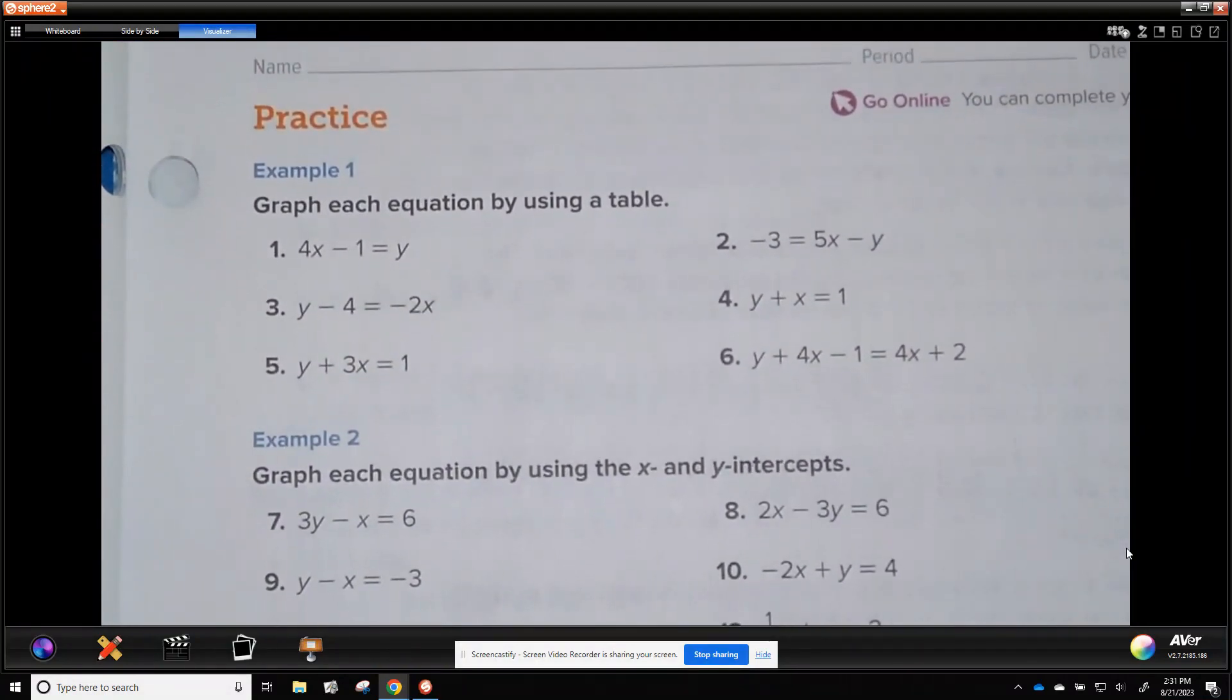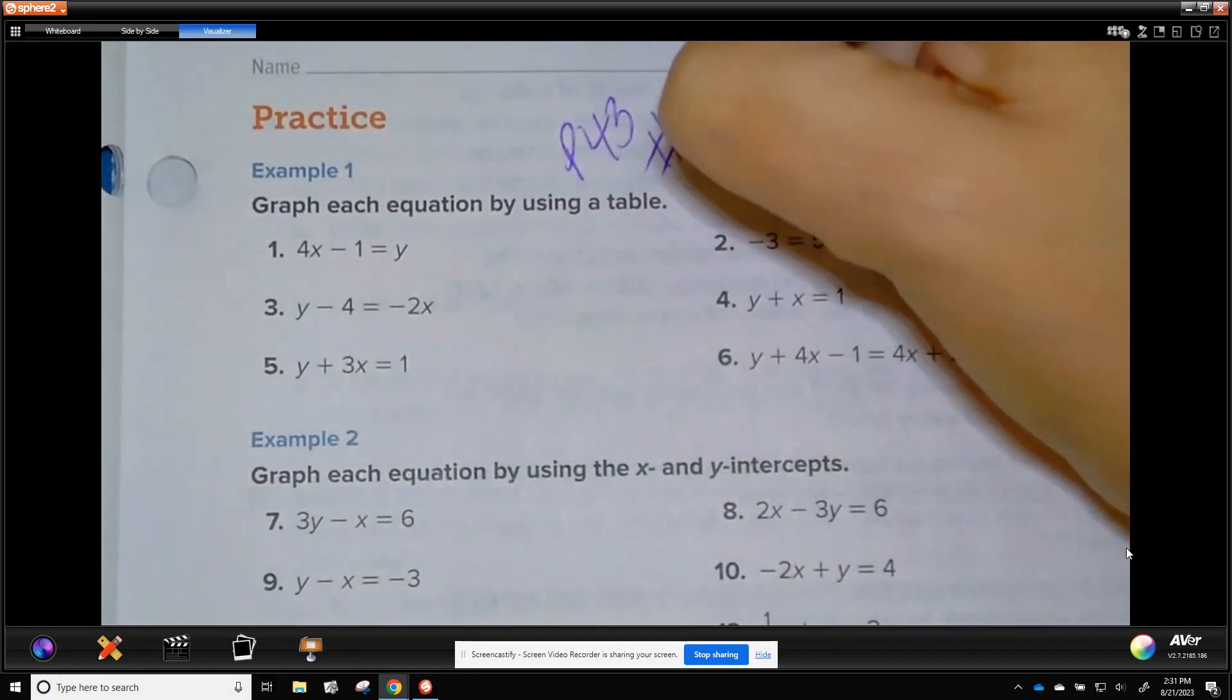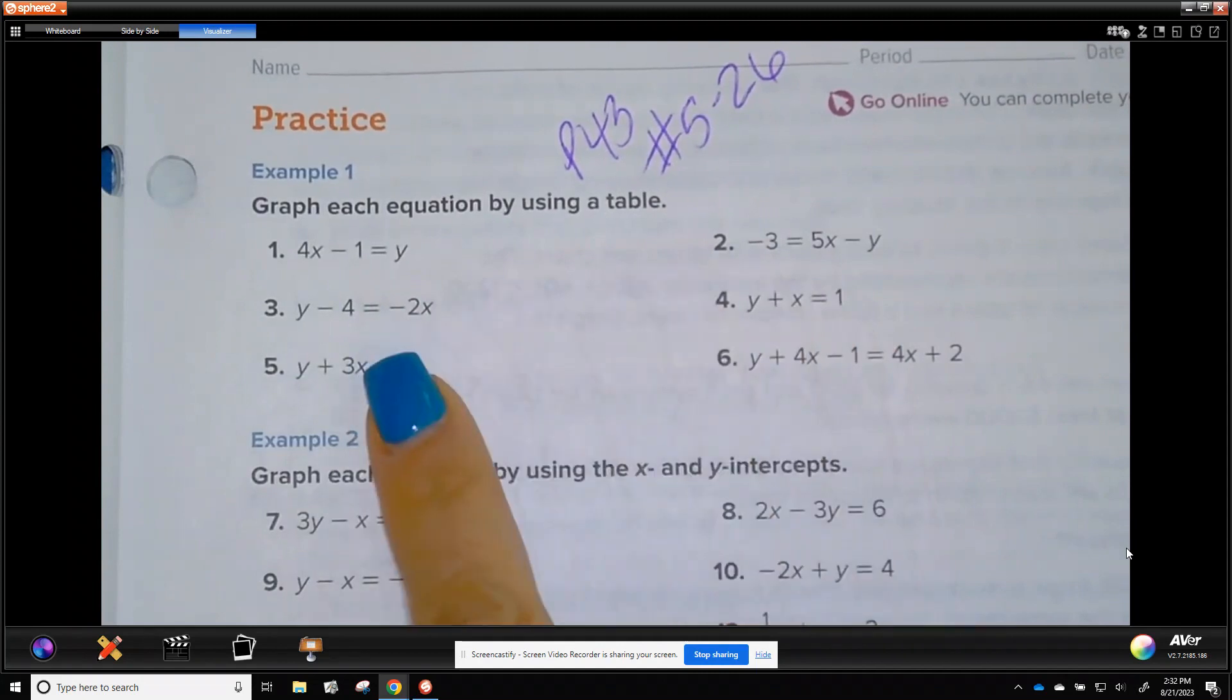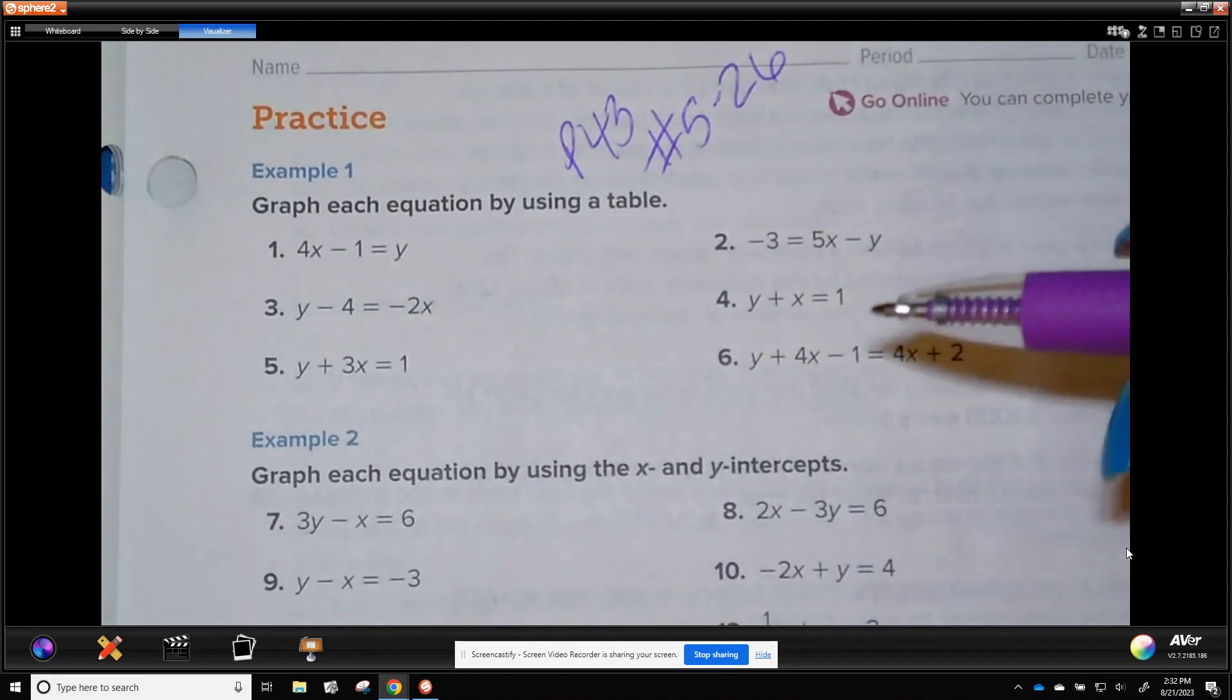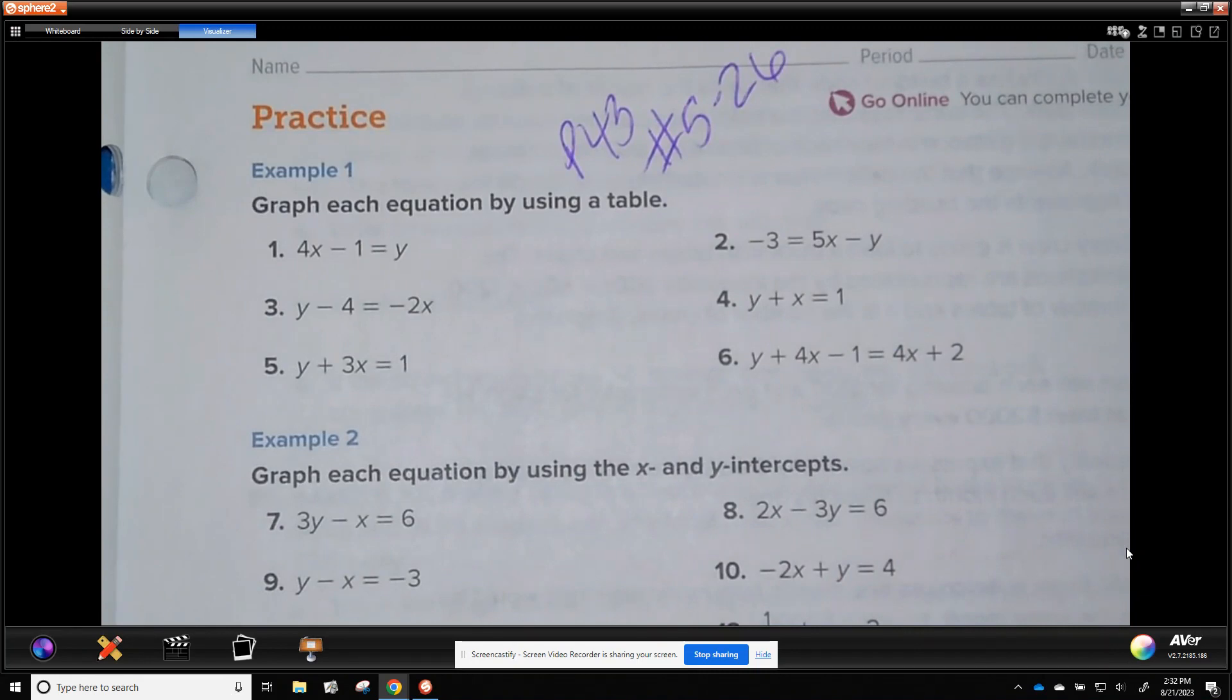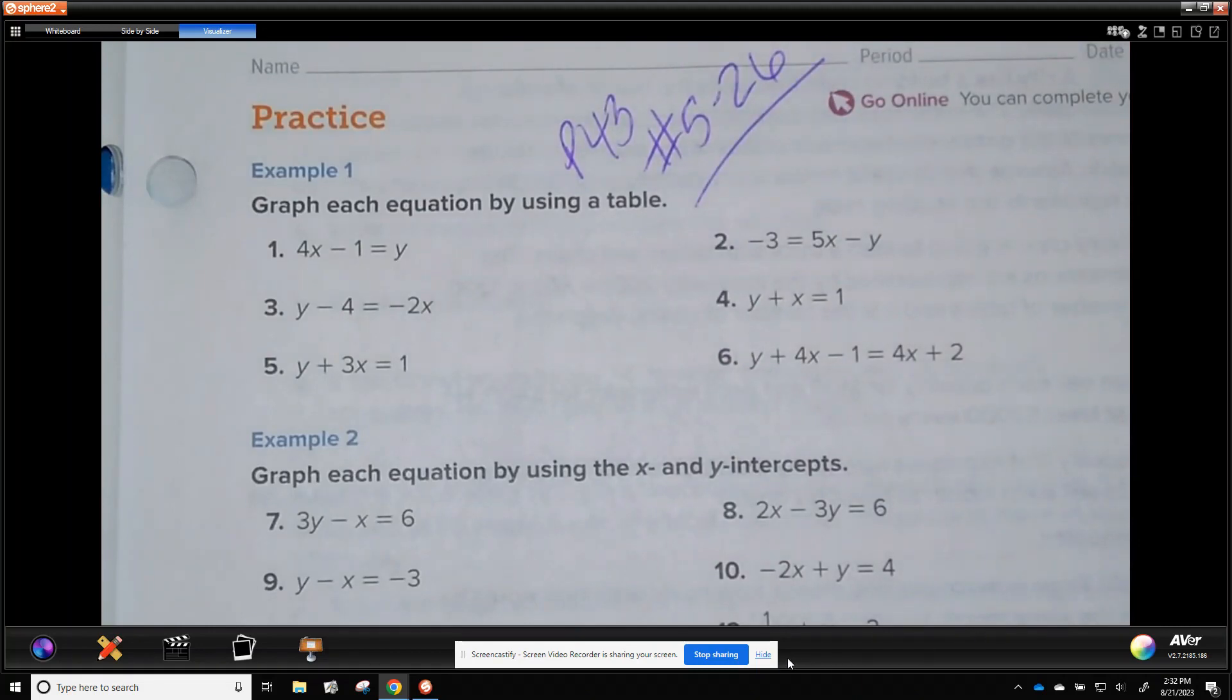This is all things you should have done in Algebra 1 a couple years ago, but your assignment is page 43, and I want you to graph 5 through 26. The way they're telling you to do it, it makes things a little easier. Especially the x and y intercepts one, you could ignore one and find the two points, like I showed you in the video. y equals mx plus b is already in a good format for you, and then the inequality is 26. So, 5 to 26, and let me know if you have any questions.